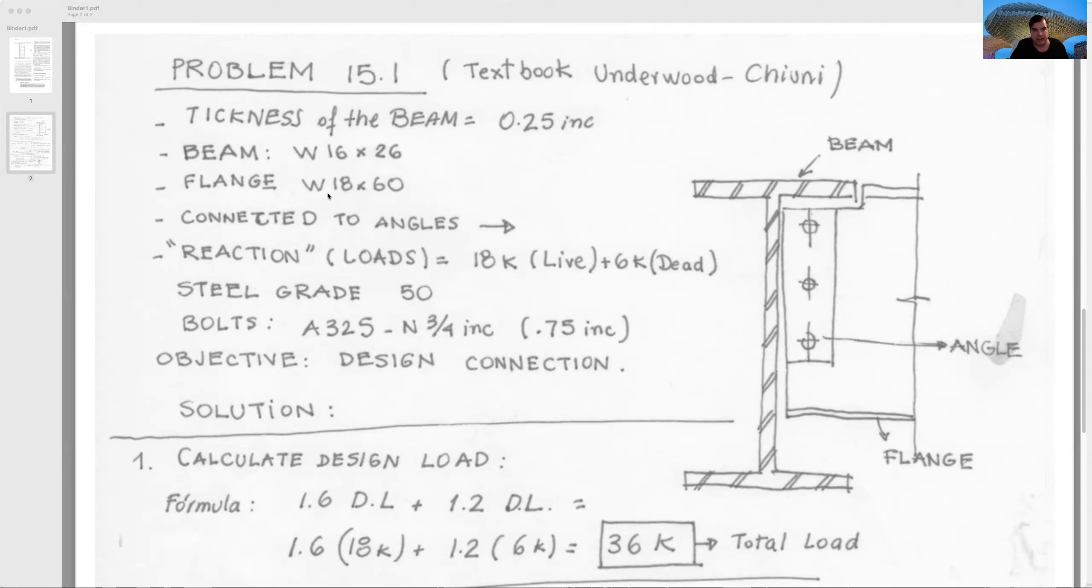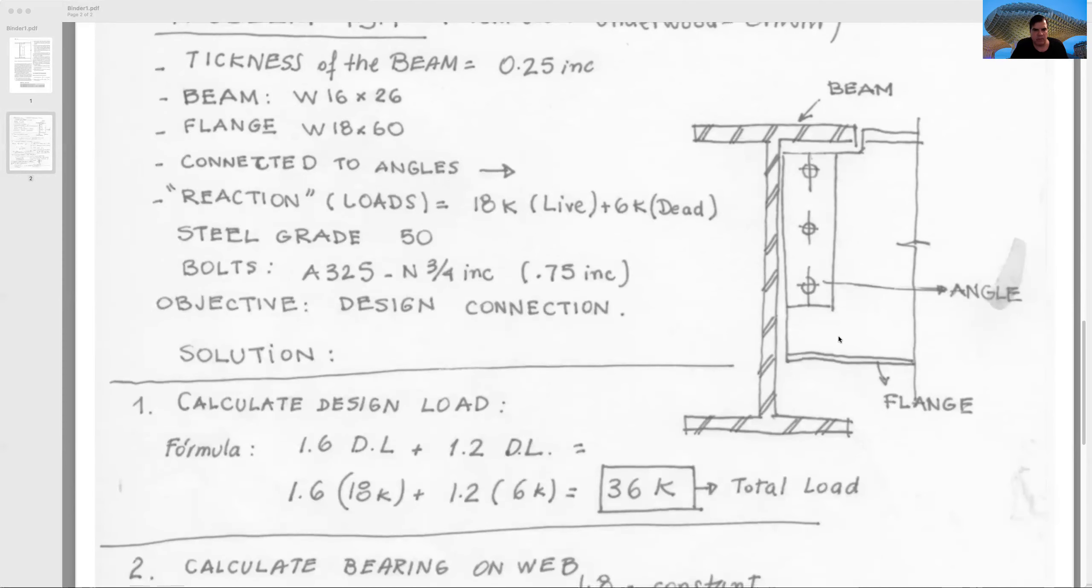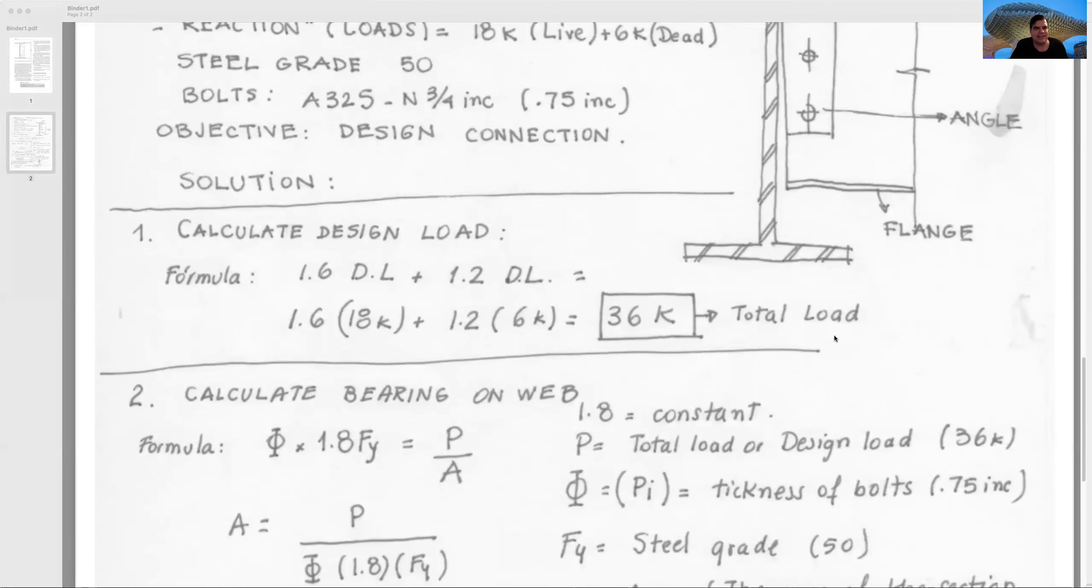We have a W16 by 26 and we have the flange W18 by 50 that are connected to an angle. We need to understand what are the loads: reactions equal to 18K live and 6K dead. The steel grade is 50, the bolts are standard A325 of 3/4 inches, that is 0.75 inches, and we need to design the connection.